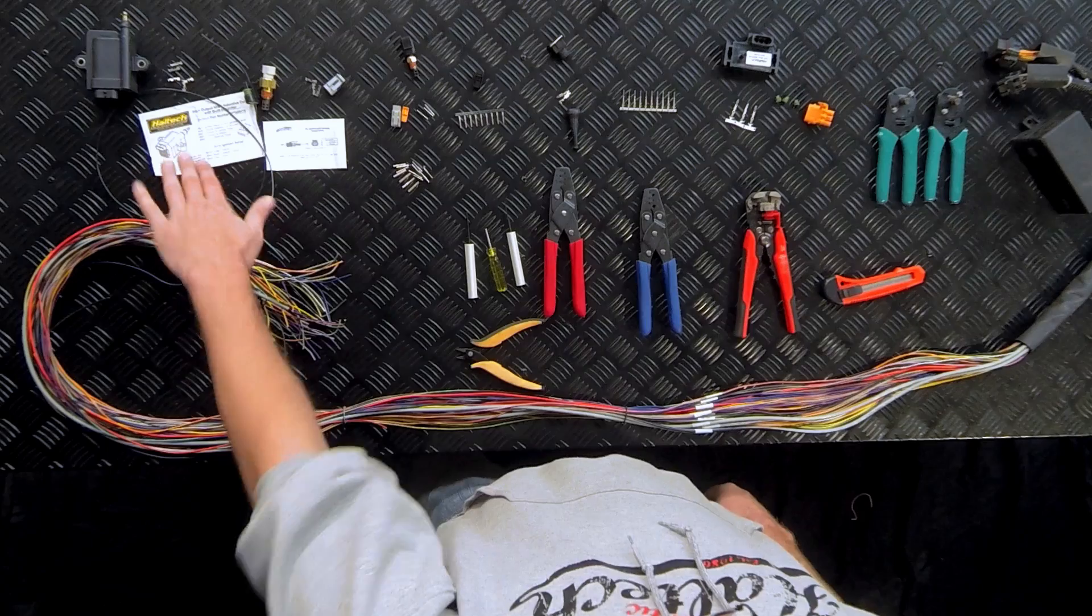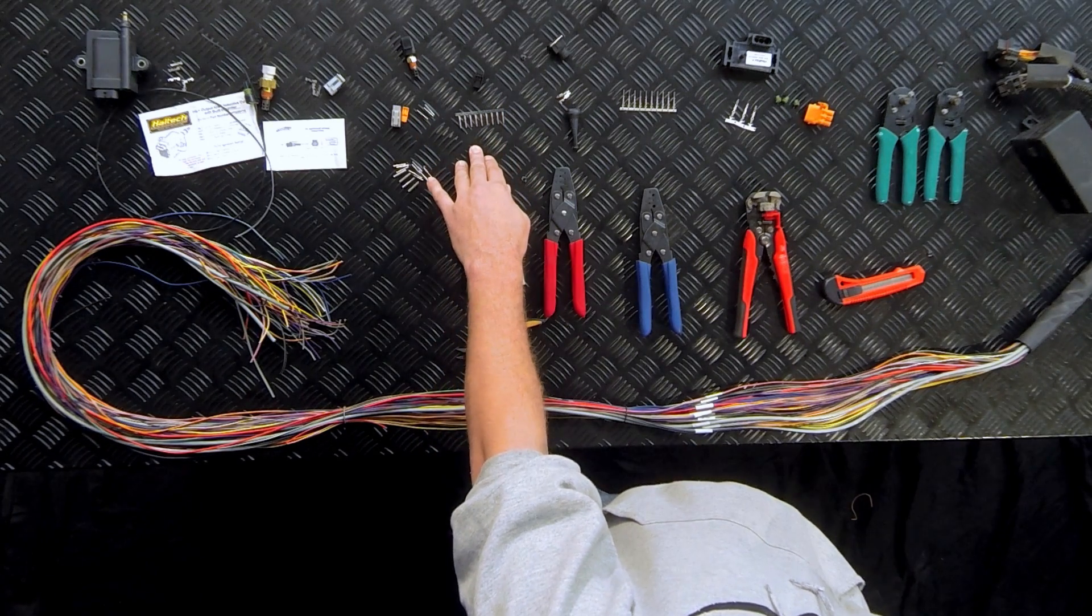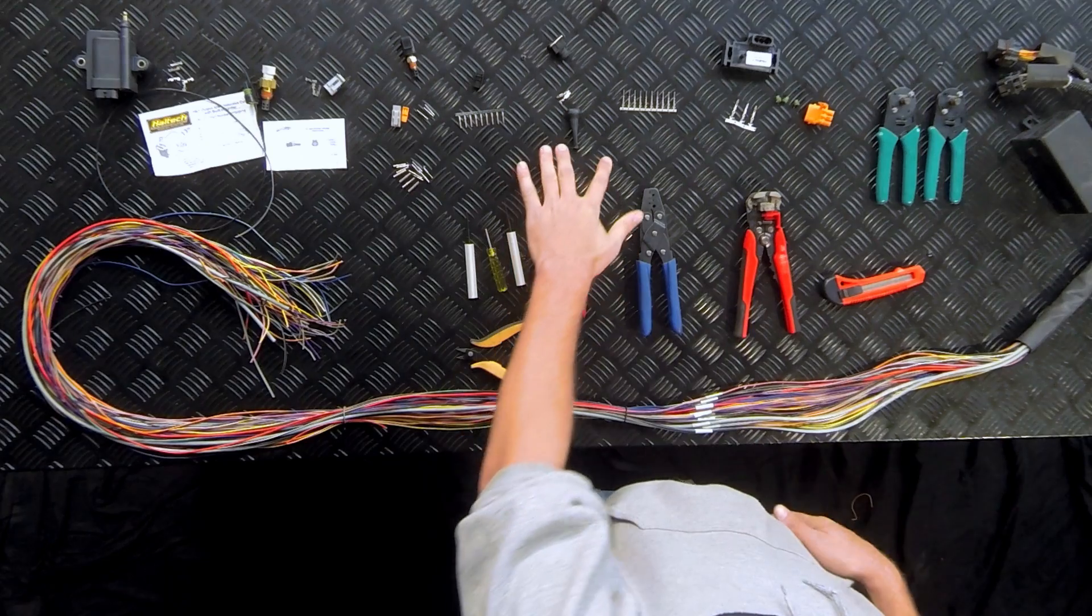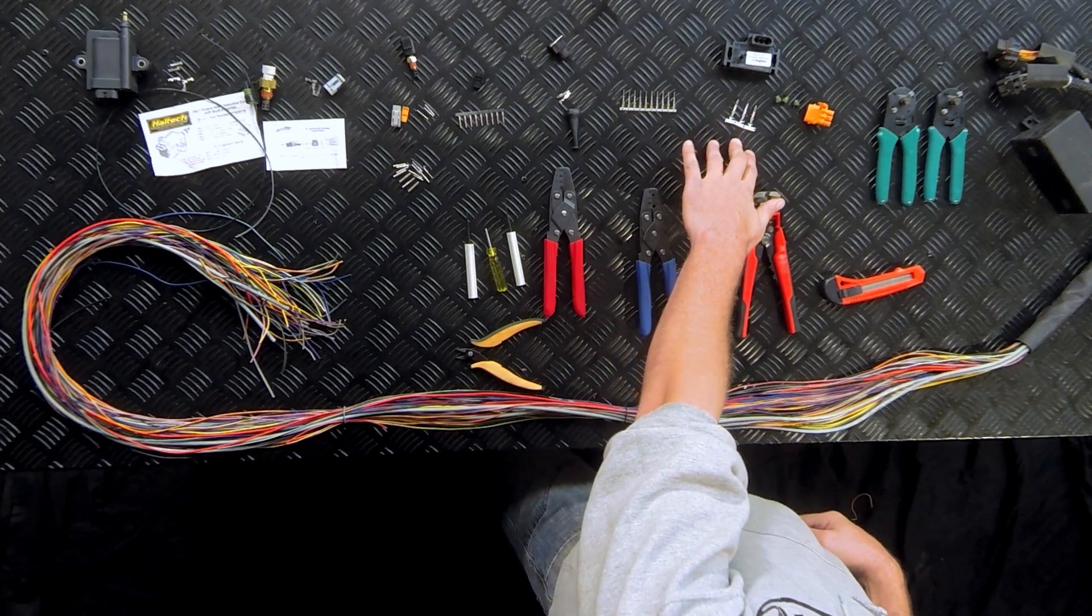Now the Haltech accessories have a whole bunch of different style plug and pin sets ranging from the GM style connectors which use a pull-to-seat style pin, Deutsch style connectors, AMP style connectors used on the Haltech CAN connector on devices like the IO box and wideband boxes, Bosch injector connectors, ECU pins, and of course the MAP sensor pins.